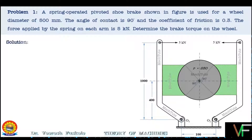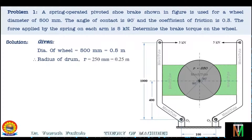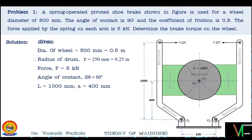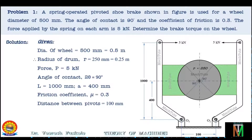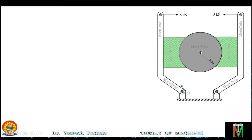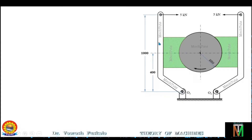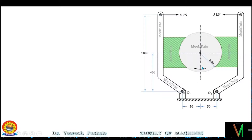Writing down the given parameters: diameter of wheel = 0.5 m, so radius = 0.25 m; force = 5 kN; angle of contact = 90°; length L = 1000 mm; distance A = 400 mm; coefficient of friction μ = 0.3; distance between pivots = 100 mm. We need to find the braking torque TB. Drawing the free body diagram: the drum has radius 250 mm, with two levers and blocks placed on the left and right sides — subscript 1 for left, subscript 2 for right. We assume the drum rotates clockwise. The two pivots are at a distance of 50 mm each from the central line.